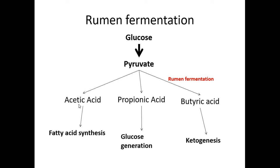The acetic acid produced in the rumen converts to fatty acids in the liver. All three volatile fatty acids produced in the rumen by ruminal fermentation are absorbed through the ruminal wall and reach the liver via blood. In the liver, acetic acid is used for fatty acid biosynthesis, propionic acid is used for glucose synthesis via gluconeogenesis, and butyric acid leads to the formation of ketone bodies through ketogenesis.